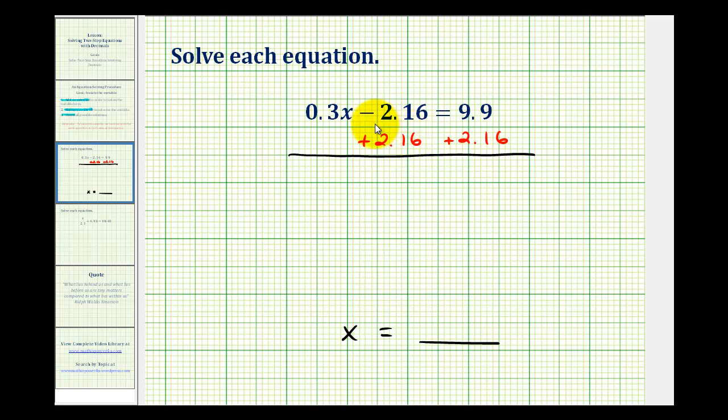Now, looking at the left side, minus 2.16 plus 2.16 would be 0, leaving us with 0.3x equals this sum here. Notice how the decimal point and the place values are lined up. Here, we may want to add a 0 in the hundredths place value. And then, we want to bring down the decimal point before we add. So, 0 plus 6 would be 6. 9 plus 1 is 10. So, we'll put a 0 here and carry a 1. 1 plus 9 plus 2 would be 12. So, we have 0.3x equals 12.06.